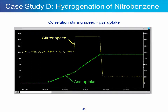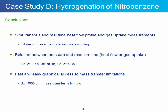Another way of taking advantage of the gas uptake signal is by varying the stirring speed and looking at how the gas uptake signal behaves — in other words, using gas uptake as an in-situ and real-time analytical technique. In this case, a stirring speed increase from 1,000 to 1,500 RPM results in a faster gas uptake, which means that mass transfer was clearly rate limiting at 1,000 RPM. In summary, gas uptake and heat flow can be used as complementary methods. Both methods are consistent and indicate a reaction endpoint after 45 minutes under 2.4 bar, 35 minutes under 4 bar, and 25 minutes under 6.3 bar. Gas uptake could be used to quickly and directly assess mass transfer limitations by increasing stirring speed and looking at the impact on the gas uptake profile.